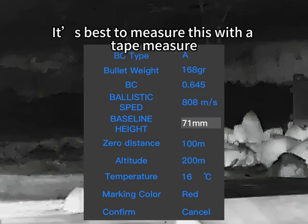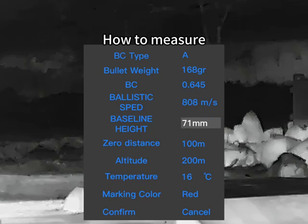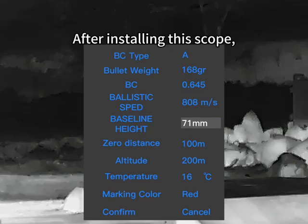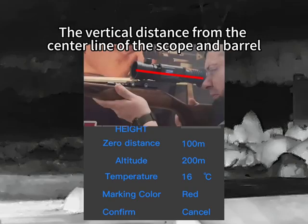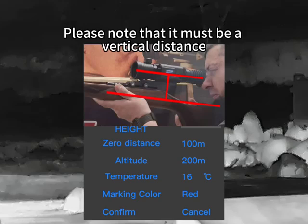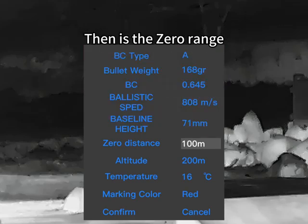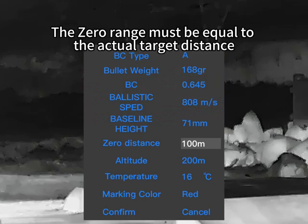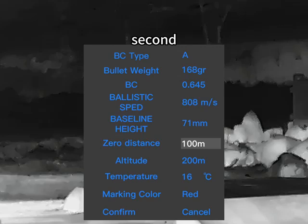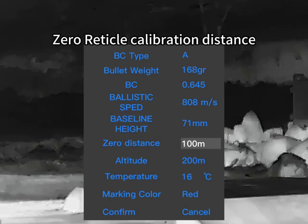It is best to measure the baseline height with a tape measure. After installing the scope, measure the vertical distance from the center line of the scope to the barrel. Please note that it must be a vertical distance. Then set the zero range — this is very important.